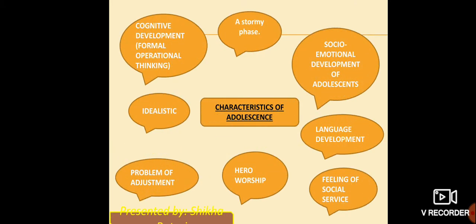Kishora avastha ki visheshata koon-koonsi hoti hai? There are some characteristics of adolescence: a stormy phase, social-emotional development, language development, feeling of social service, hero worship, problem of adjustment, idealistic, and cognitive development, as you can see in this slide.